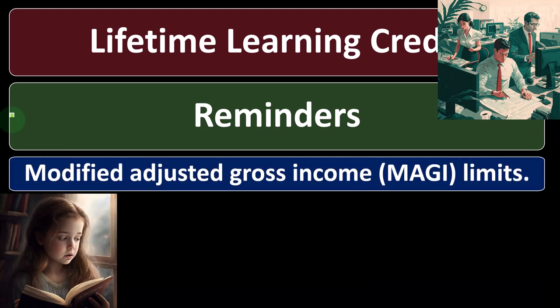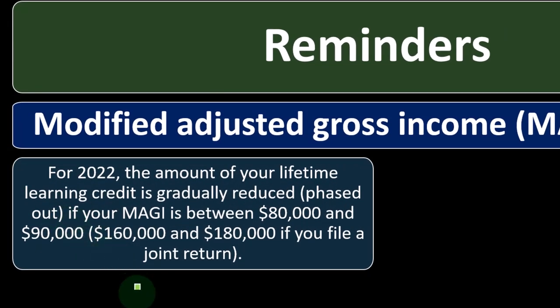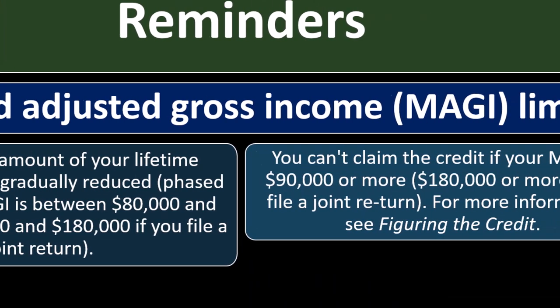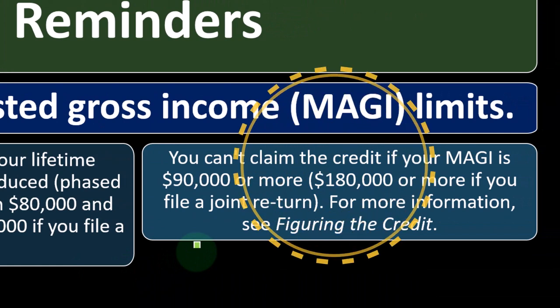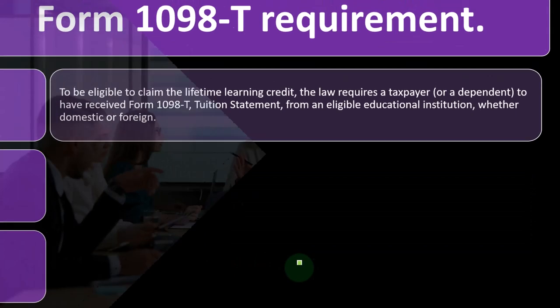Lifetime Learning Credit reminders regarding Modified Adjusted Gross Income (MAGI) for 2022: The amount of your Lifetime Learning Credit is gradually reduced — phased out — if your MAGI is between $80,000 and $90,000, or between $160,000 and $180,000 if you file a joint return. You can't claim the credit if your MAGI is $90,000 or more, or $180,000 or more if you file a joint return.